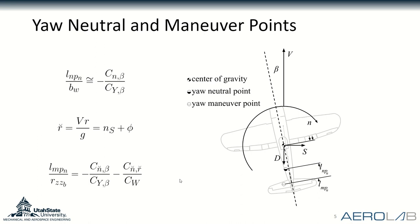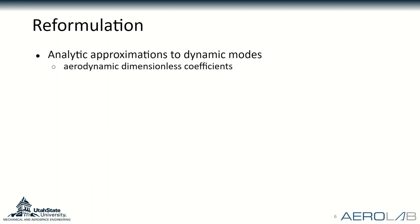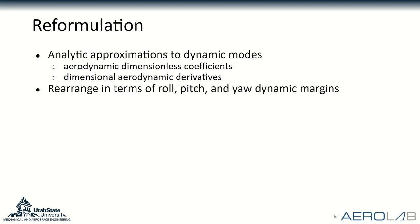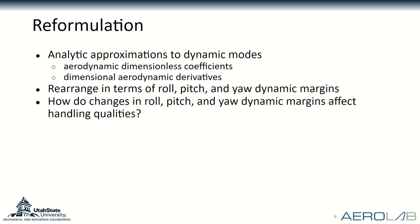Now we've developed static and dynamic margins in roll, pitch, and yaw. The next step is: how would these change handling qualities? Typically, when we look at dynamic mode approximations, we do them in terms of aerodynamic dimensionless coefficients or dimensional aerodynamic derivatives. We wanted to reformulate these approximations in terms of the roll, pitch, and yaw dynamic margins, and examine how they affect aircraft handling qualities. I'll go into brief detail on the short period mode and the Dutch roll mode, as there were some interesting findings there, though we also learned some things about the phugoid and spiral modes — for more information, check out the paper.